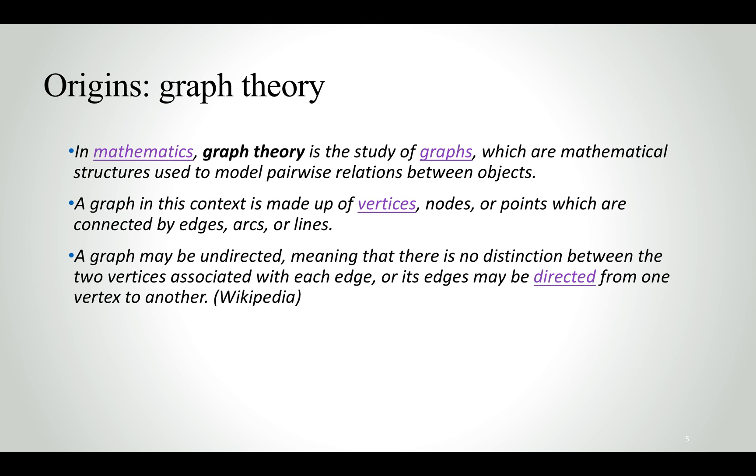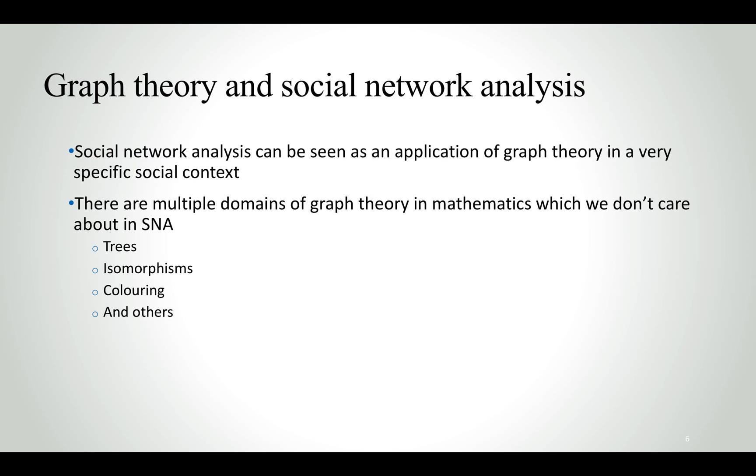The origins of social network analysis are in graph theory. Graph theory is the study of graphs, which are mathematical structures used to model pairwise relations. A graph is made up of vertices, nodes and points which are connected with each other. You can have either undirected graphs or directed graphs. In directed graphs you need to specify the direction of the interaction, whereas in undirected graphs this is not the case.